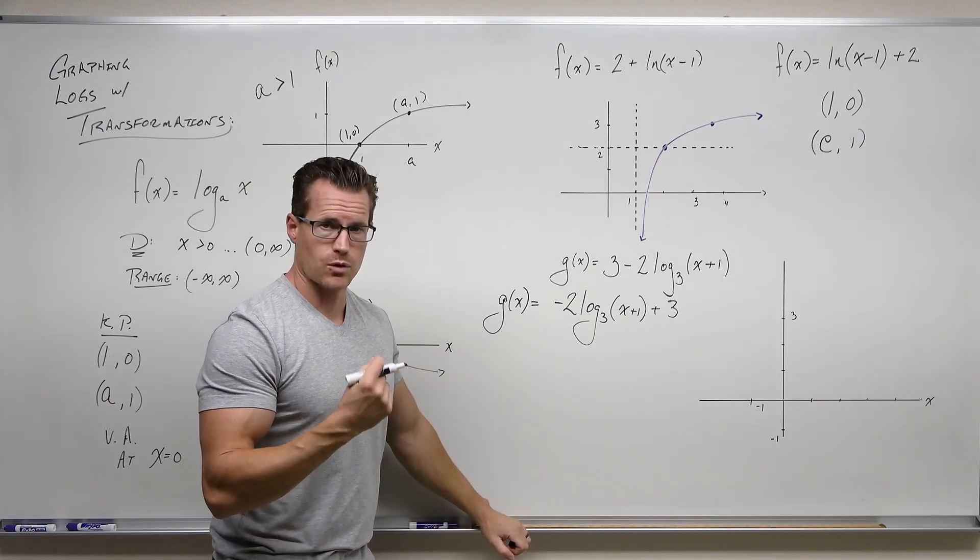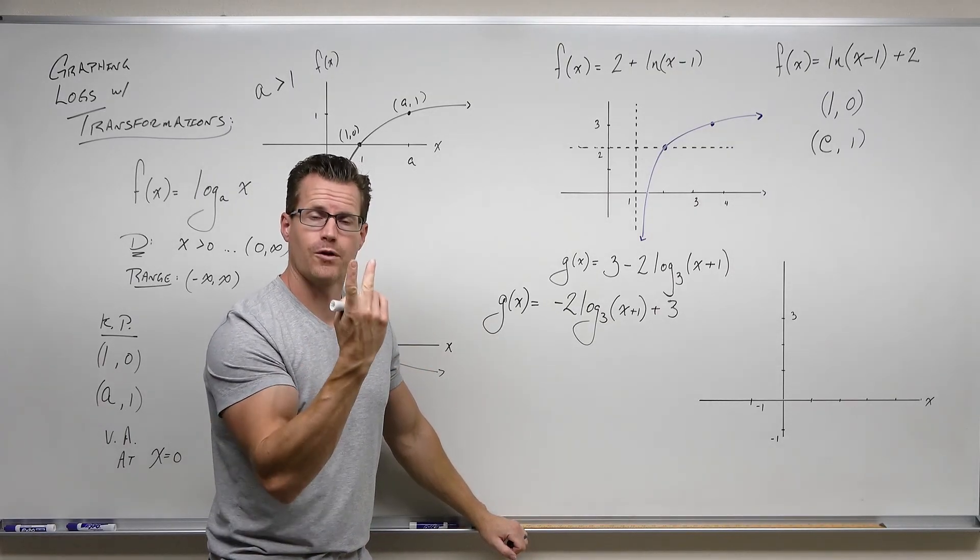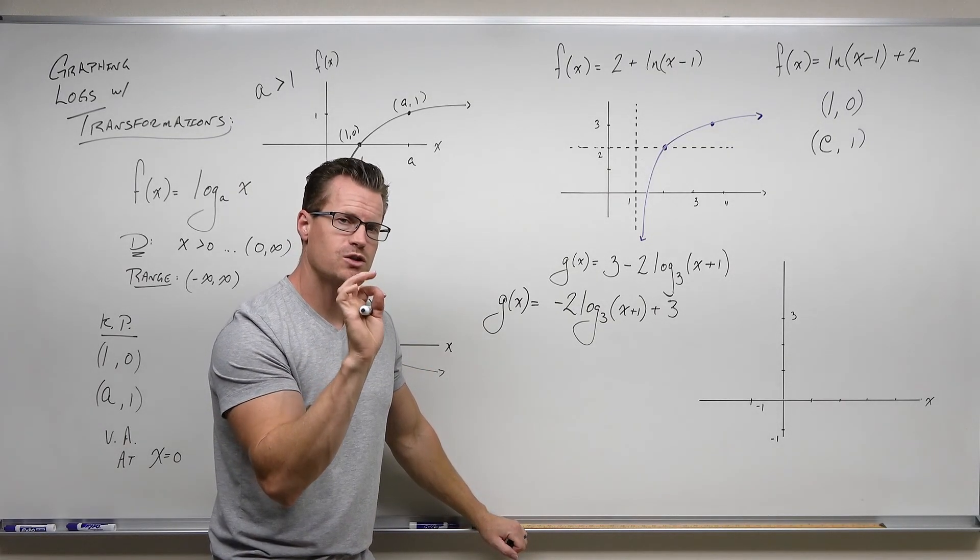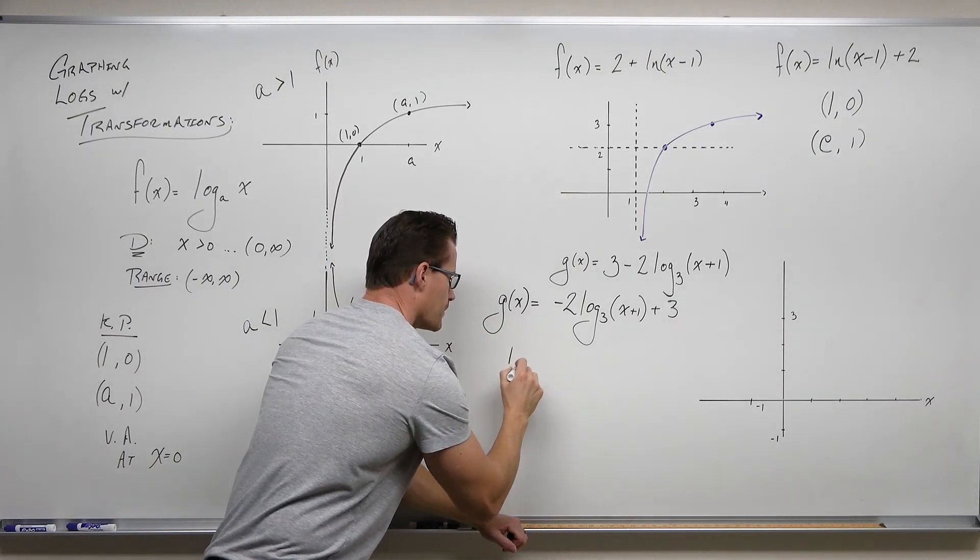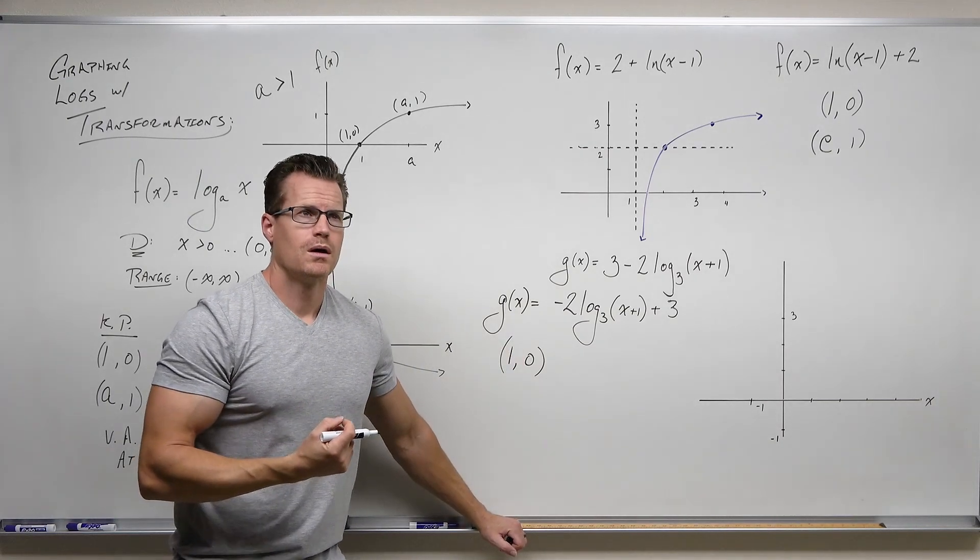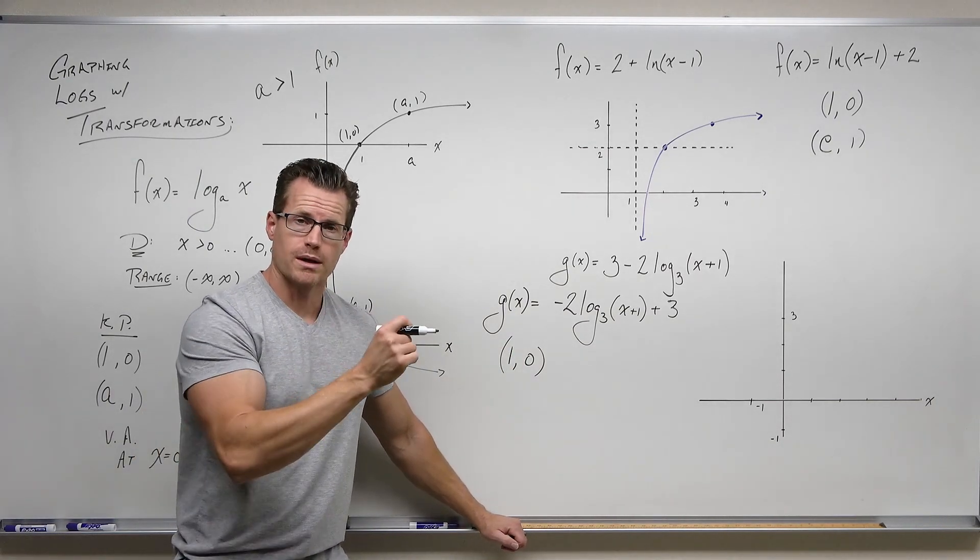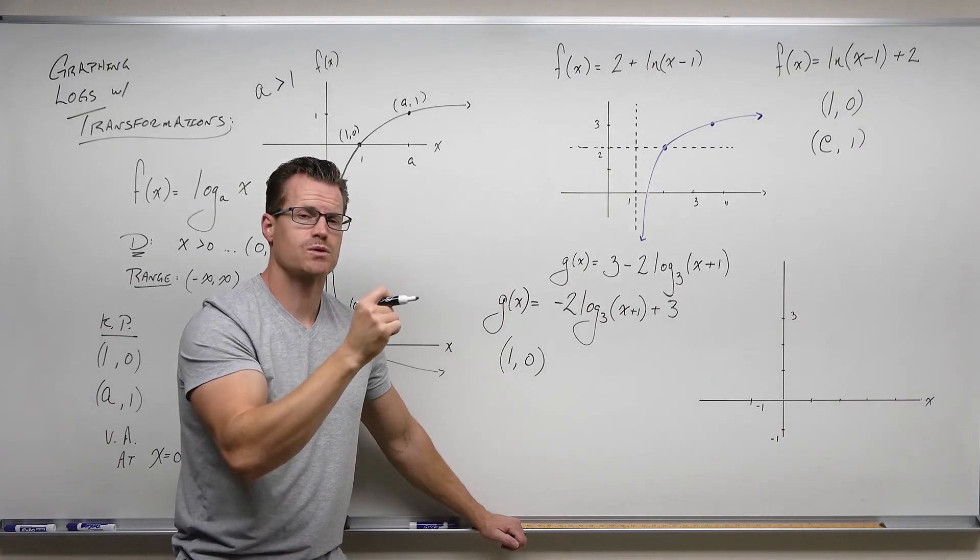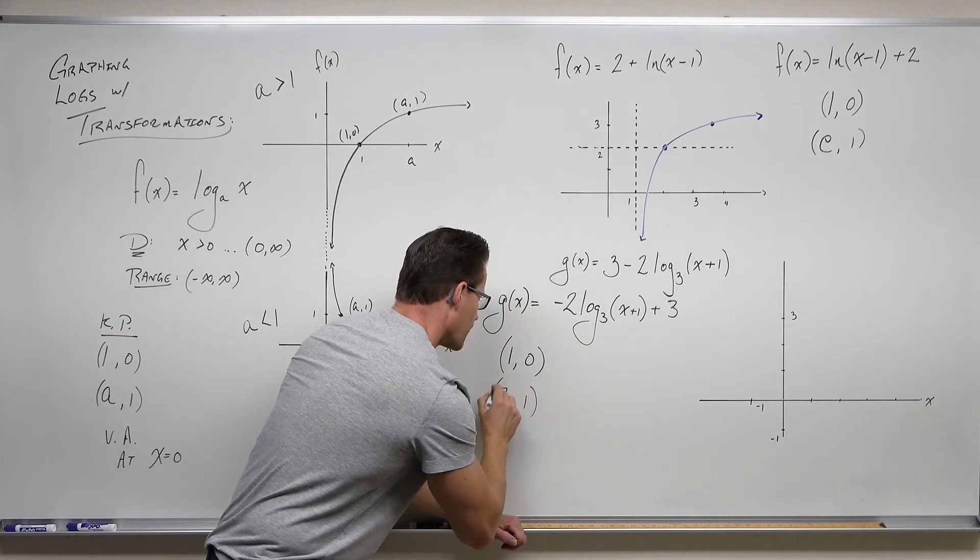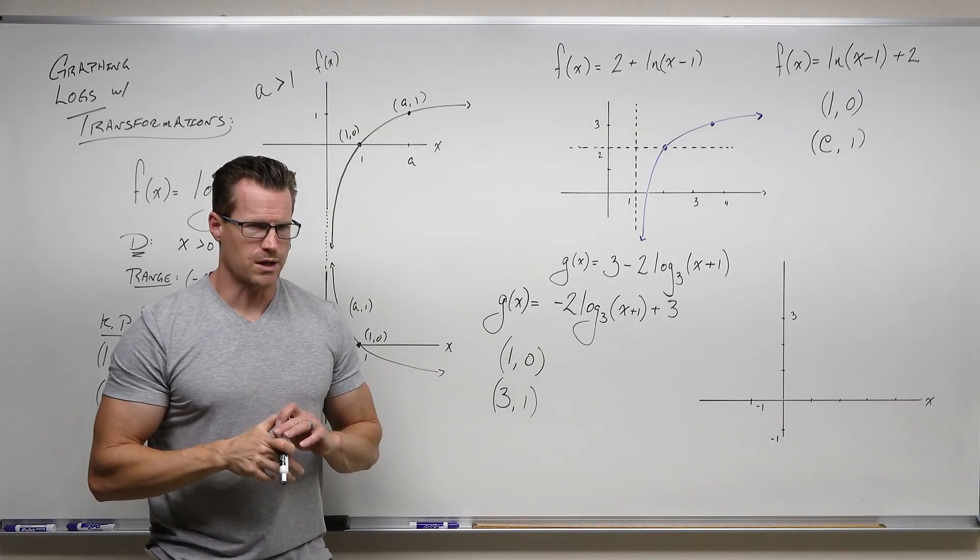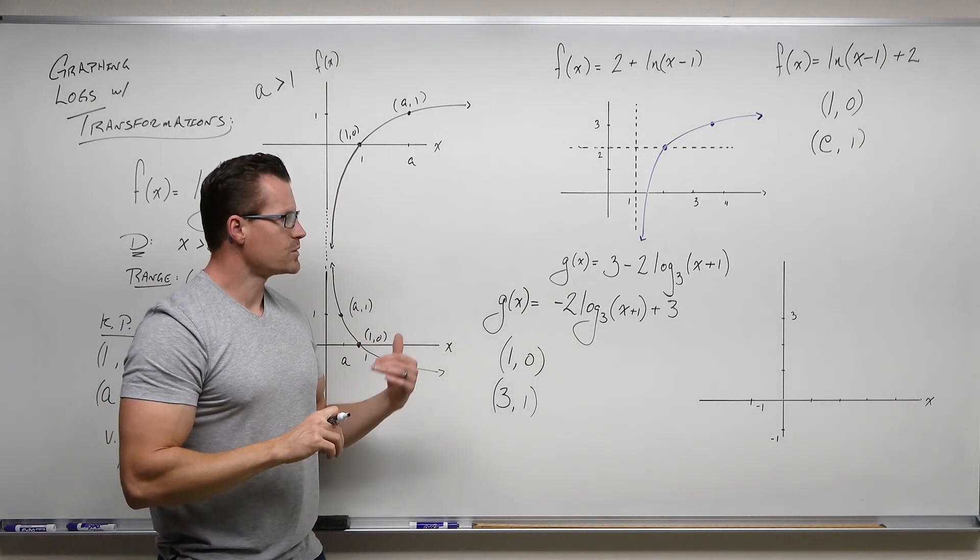Our key points for logarithms are always the reverse of exponentials. So in exponentials, we get 0, 1. For logarithms, we get 1, 0. For exponentials, we got 1, the base. And so for logarithms, we're going to get the base, 1. Our base here is 3. Okay, once we've done that, we start to identify any transformations we have.